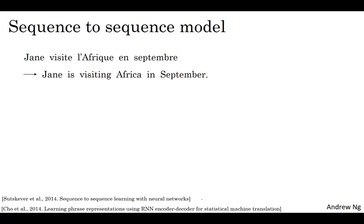Let's say you want to input a French sentence like, Jane visite l'Afrique en septembre, and you want to translate it to the English sentence, Jane is visiting Africa in September. As usual, let's use x1 through x5 to represent the words in the input sequence, and we'll use y1 through y6 to represent the words in the output sequence. So how can you train a neural network to input the sequence x and output the sequence y? Well, here's something you could do.